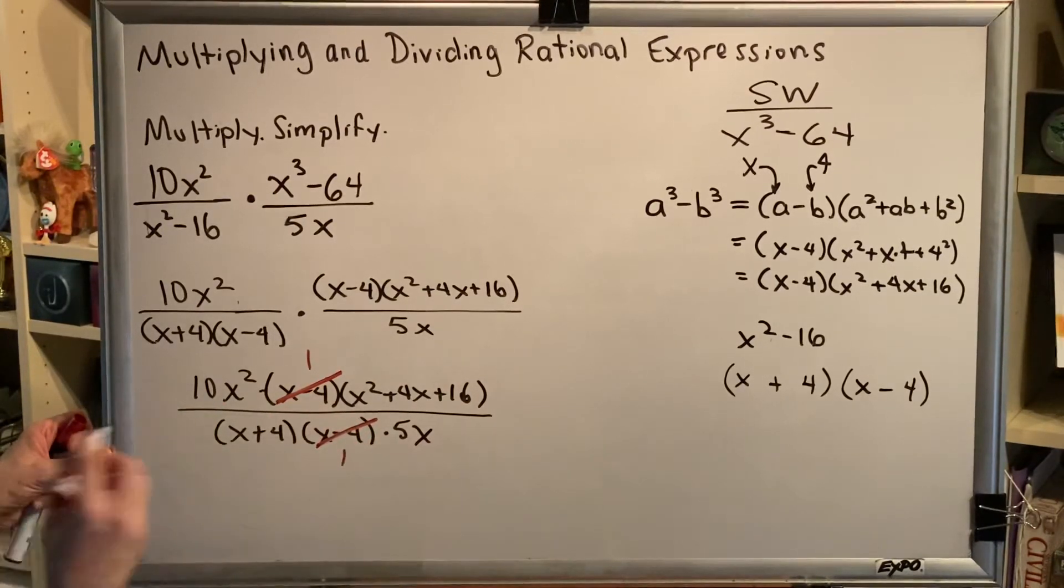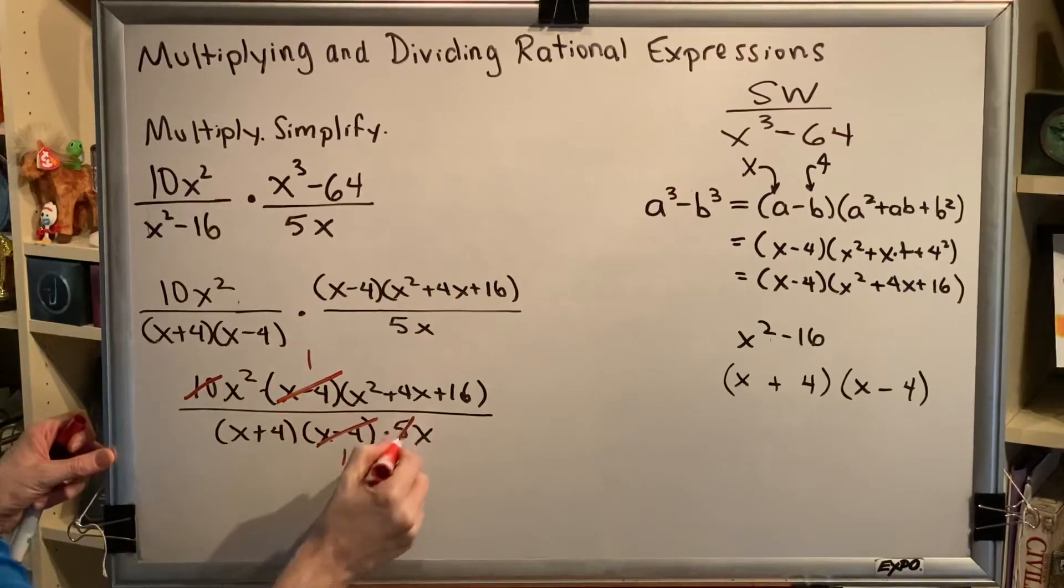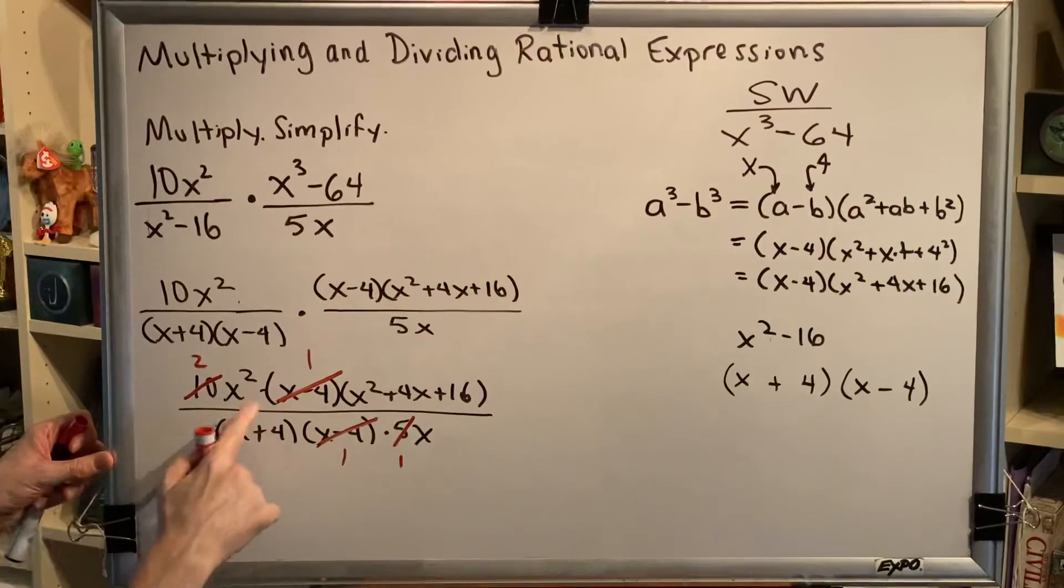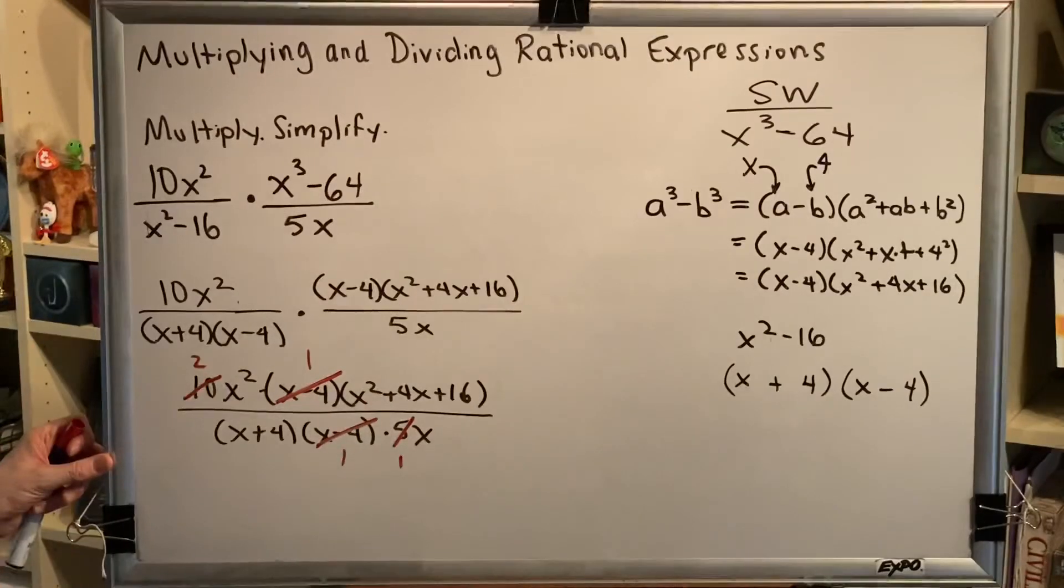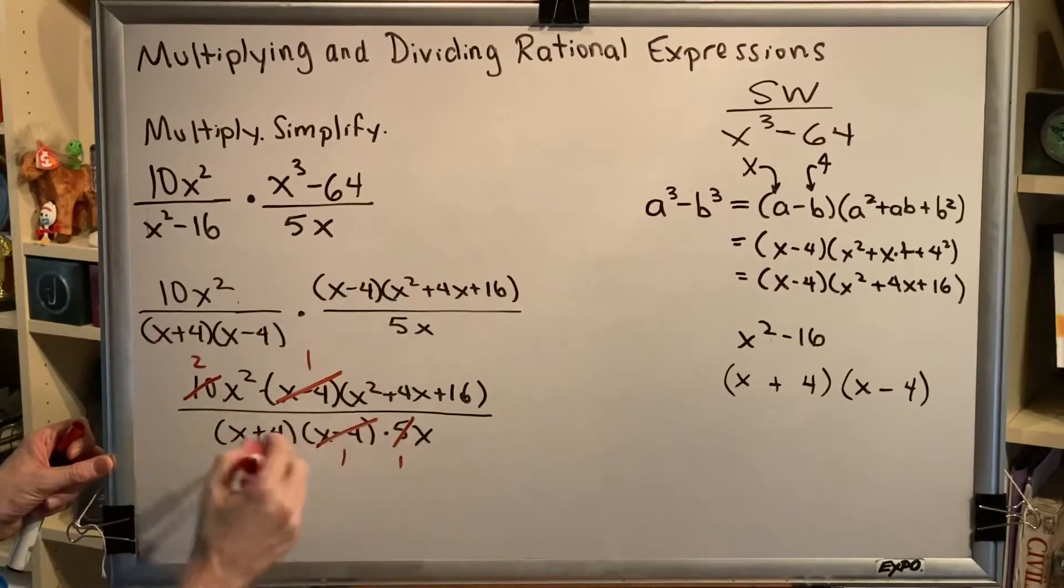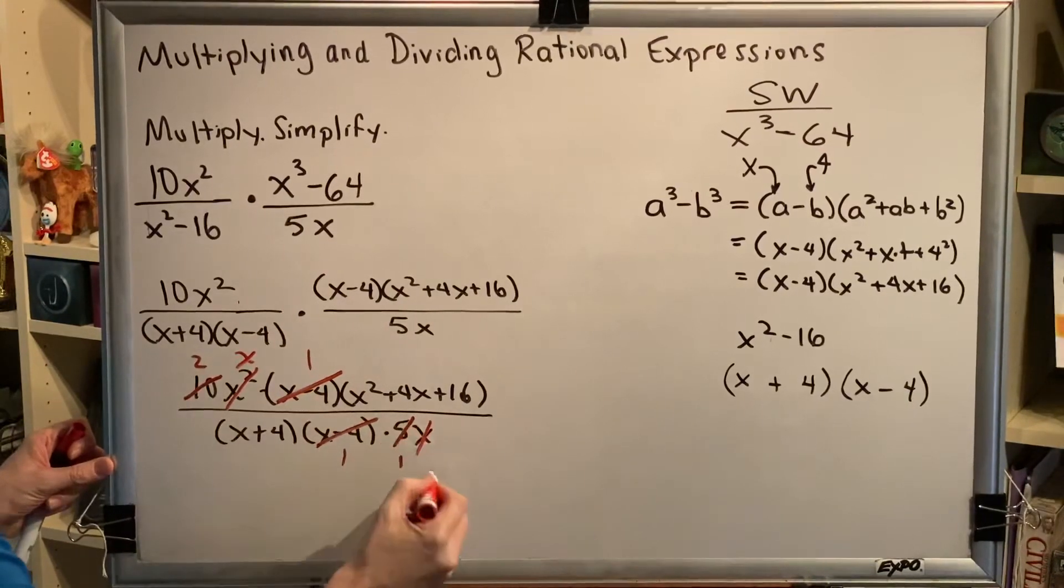For example, 10 divided by 5 is 2. So replace 10 over 5 with 2 over 1. x² divided by x is simply x. So we can replace x² over x with x over 1.